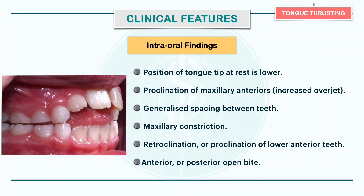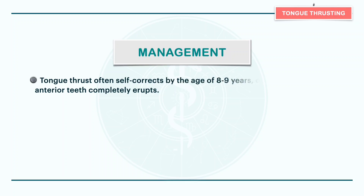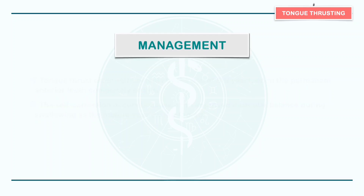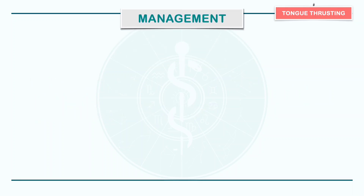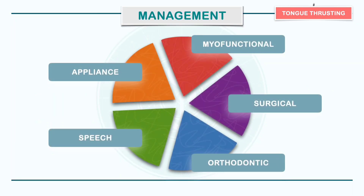Tongue thrust often self-corrects by the age of 8-9 years once the permanent anterior teeth completely erupt. The self-correction occurs because of an improved muscular balance as the mature swallow is adopted. There are several treatment modalities depending on the underlying causes and associated problems.